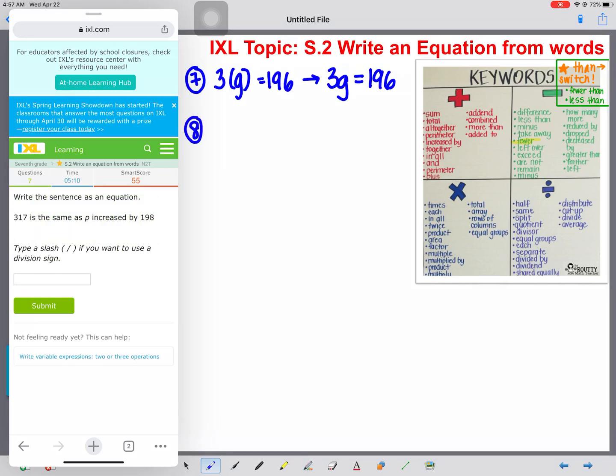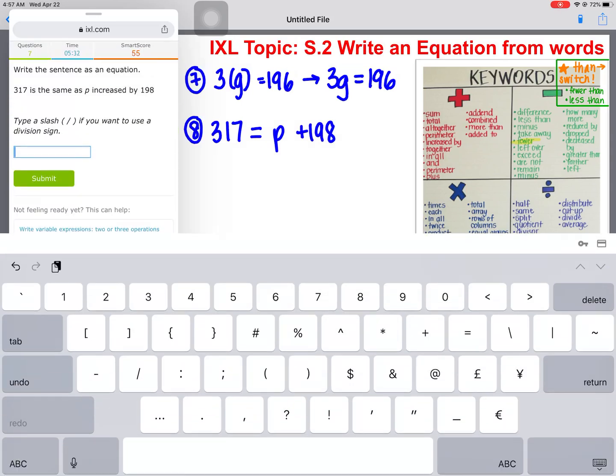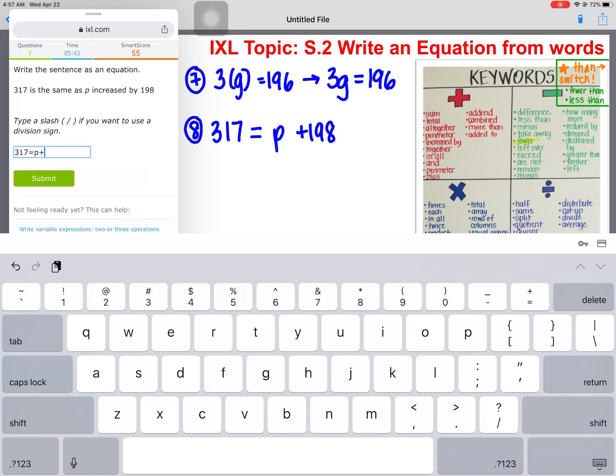All right, try number eight. 317 is the same as P increased by 198. Okay, so we are starting out. 317 is the same as, is the same as, is equals P, so we write P, plus 198. All we're doing is translating our math sentence into numbers, variables, and operation symbols. P, plus 198.